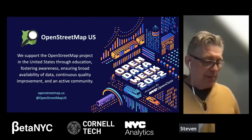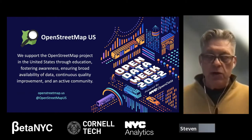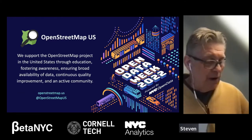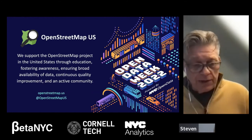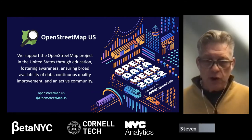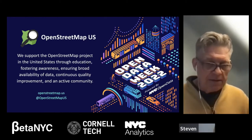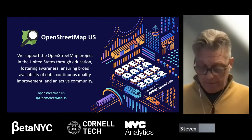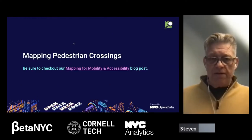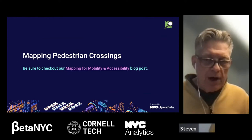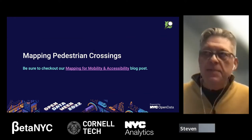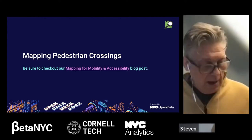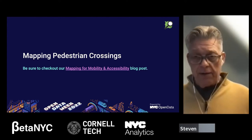OpenStreetMap US is an organization we stood up in 2010 to support OpenStreetMap in the United States. A lot of our activities are focused on education — we conduct numerous in-person and virtual workshops. We also have people working on data availability, data quality, and community organizing. We have a blog post on mapping for mobility describing how today's activities can increase mobility and accessibility, particularly for pedestrians, cyclists, and those with limited mobility.